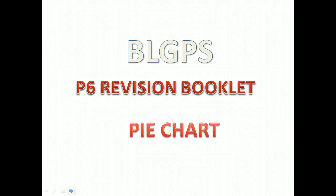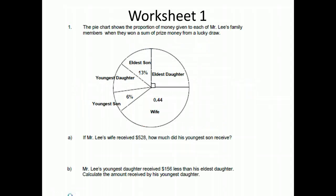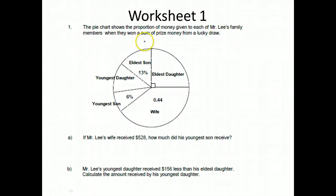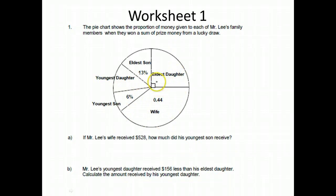Hello everyone. Let's look at our BLGPS P6 revision booklet on pie chart. Worksheet 1, Question 1. The pie chart shows the proportion of money given to each of Mr. Lee's family members when they won prize money from a lucky draw. From this pie chart, we notice that there is a right angle here. When we see a right angle in a pie chart, we put down one quarter.